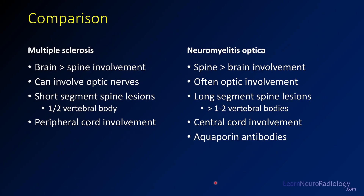Comparing MS versus NMO: in MS the brain tends to be more involved than the spine, whereas in NMO it's flipped. Both can involve the optic nerves. MS tends to involve shorter spine segments — maybe half a vertebral body or less — while NMO tends to have longer segment lesions. The central cord is more likely involved in NMO, whereas MS tends to be more peripheral. Aquaporin-4 antibodies on clinical testing is the key differentiator for NMO.